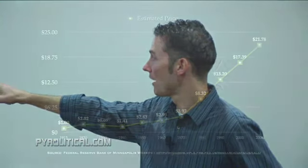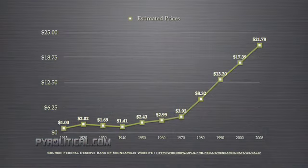The big problem was that the gold standard minimized the inflationary effects of the dollar. From 1940 to 1970 we only increased about 250% in the value of the dollar, but from that point it's gone crazy because we don't have anything to link it to.